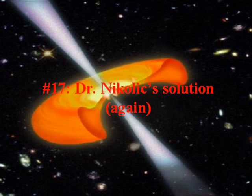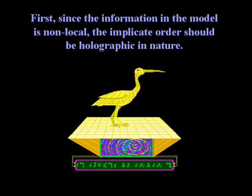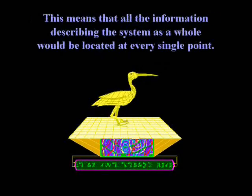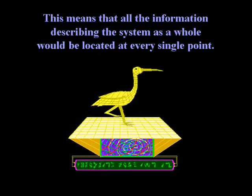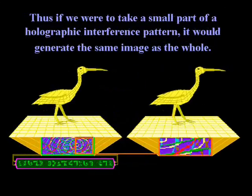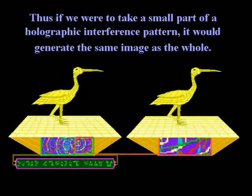I want to get back to the 17th solution for a moment, even though I already proved that it is completely compatible with and even based on the holographic principle. In this paper, Dorbaton, you quote: 'The full wave function of the universe still contains all the information and no fundamental violation of unitarity takes place, even though the information falls into the black hole.' Well, what does that sound like? That sounds just like physics of the hidden world, which is exactly what you wanted to disprove with all this. I mentioned that you can chop the interference pattern up, and the same information that generates the whole is located in every single point. That's exactly what Dr. Nikolic is saying here.